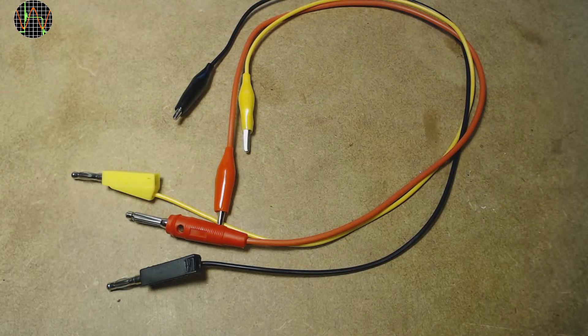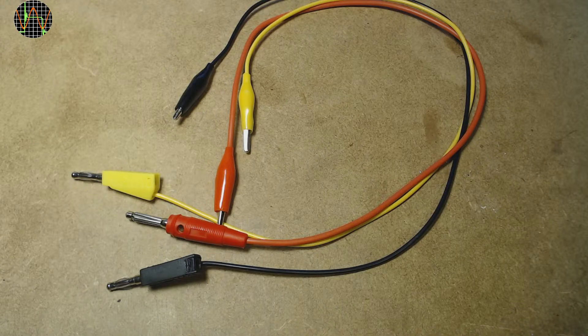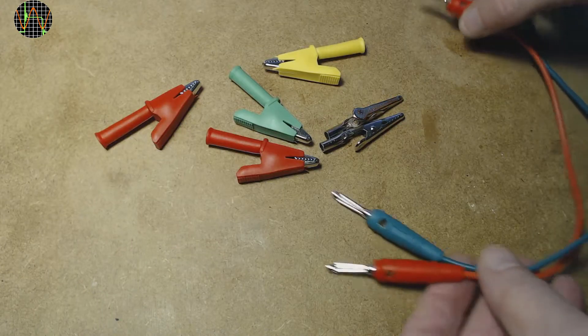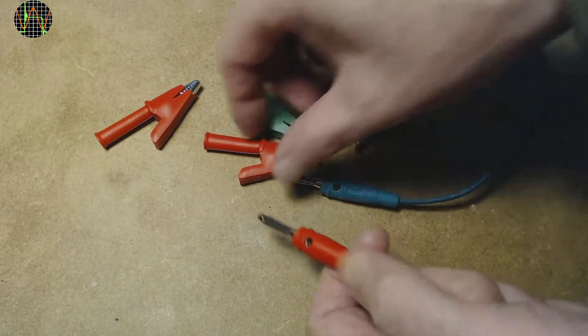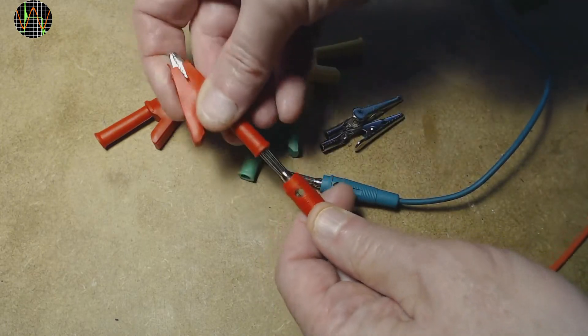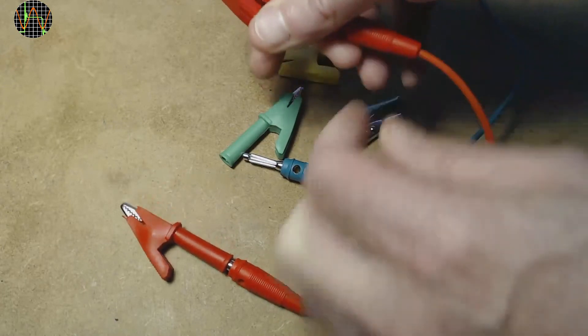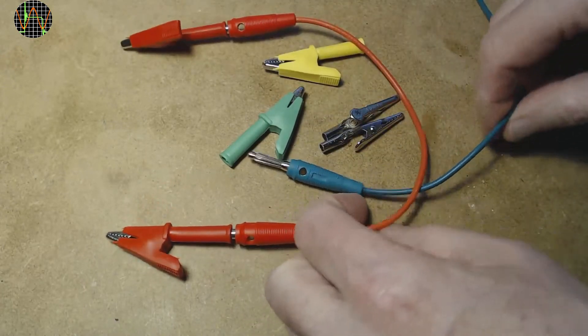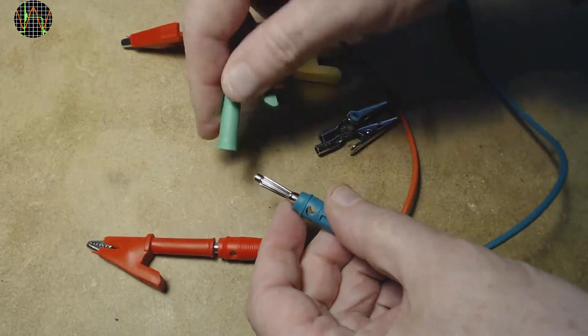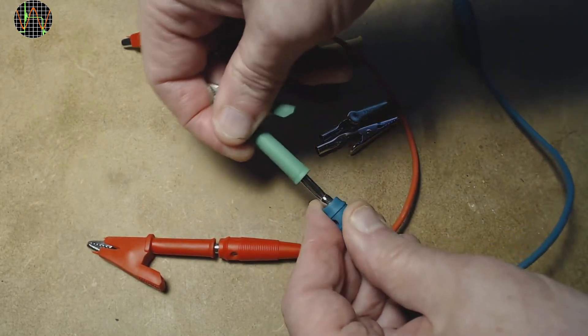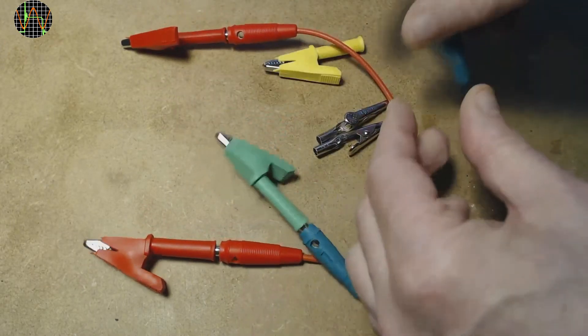The alligator clips can carry much more current than the flimsy wire they came with. Worthwhile having is a set of alligator clips that can be attached to 4mm banana plugs. These are more heavy-duty than the thin ones and convert banana plug ends temporarily into alligator clips, particularly useful for connecting to battery terminals and the like.